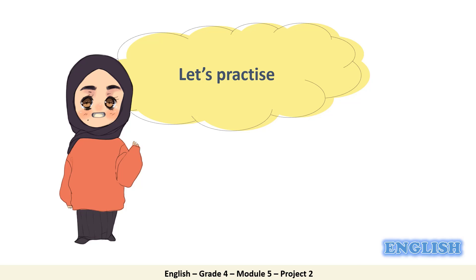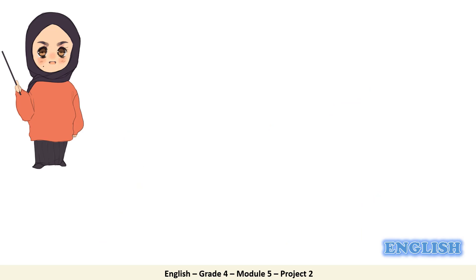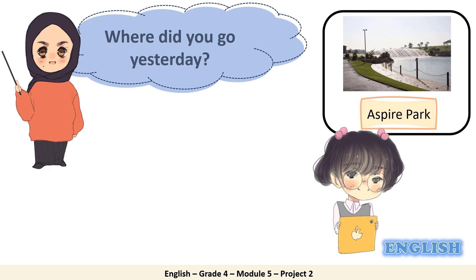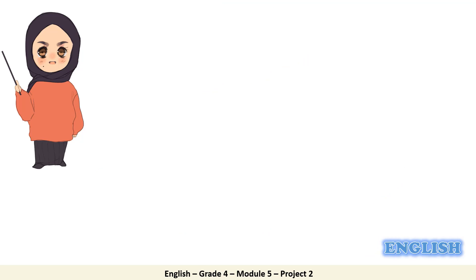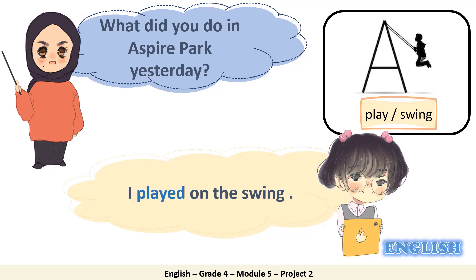Now it's time to have some practice with Noor and Ahmed. Ms. Huda will ask them questions, and you will help them answer her questions after referring to the pictures. Read the question with me: 'Where did you go yesterday?' Look at the picture — it's written under it: Aspire Park. So Noor will say, 'I went to Aspire Park.' Great, she used the verb in the past. Let's continue: 'What did you do in Aspire Park yesterday?' Look at the picture — it's a swing. It's written under the picture: Play Swing. So Noor will say, 'I played on the swing.' Great job.